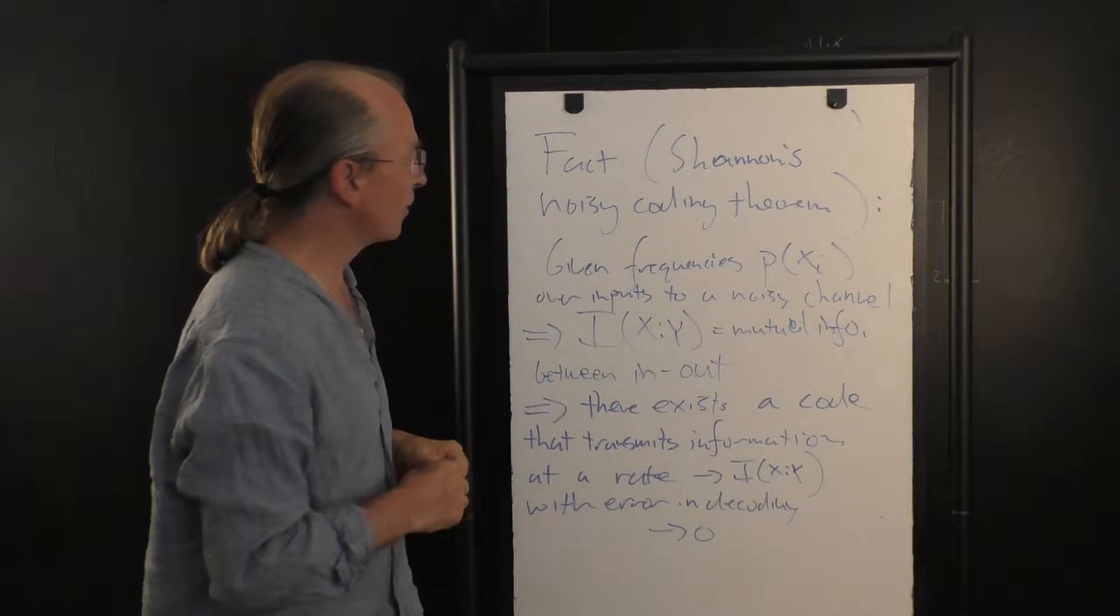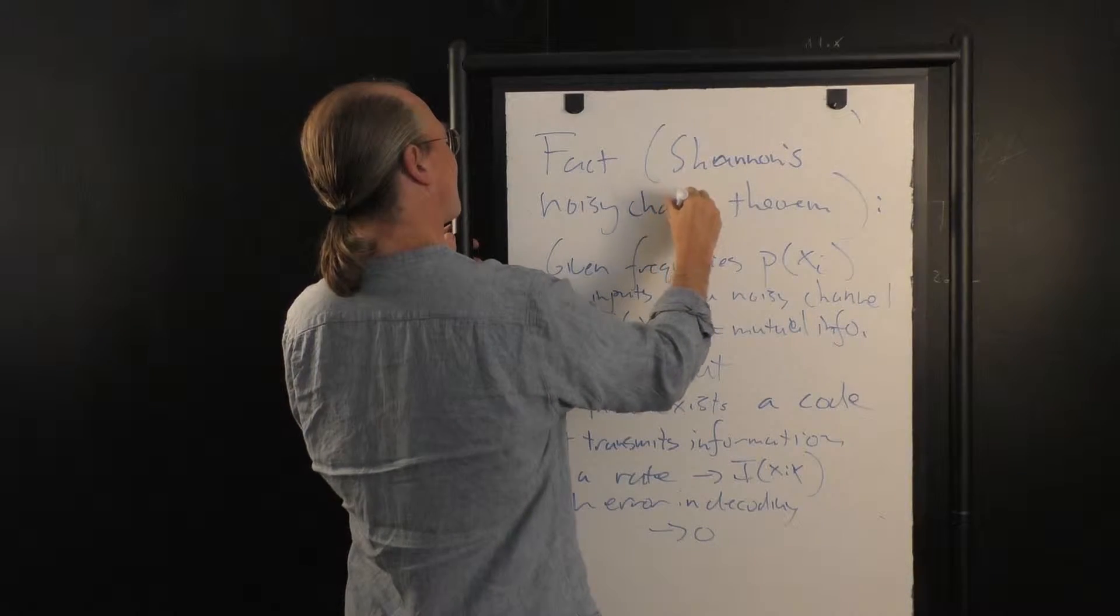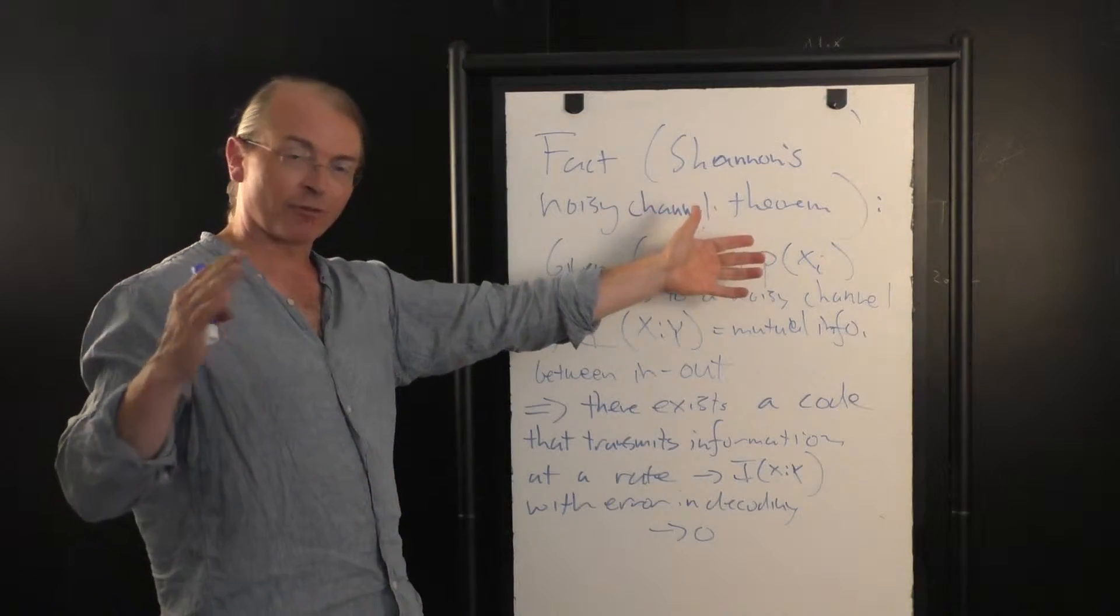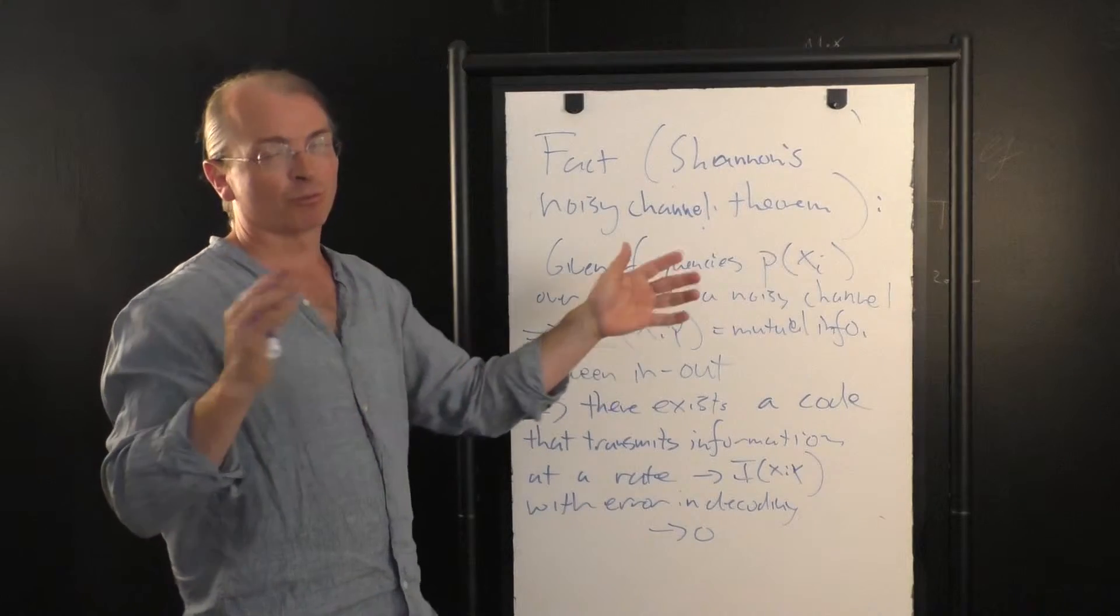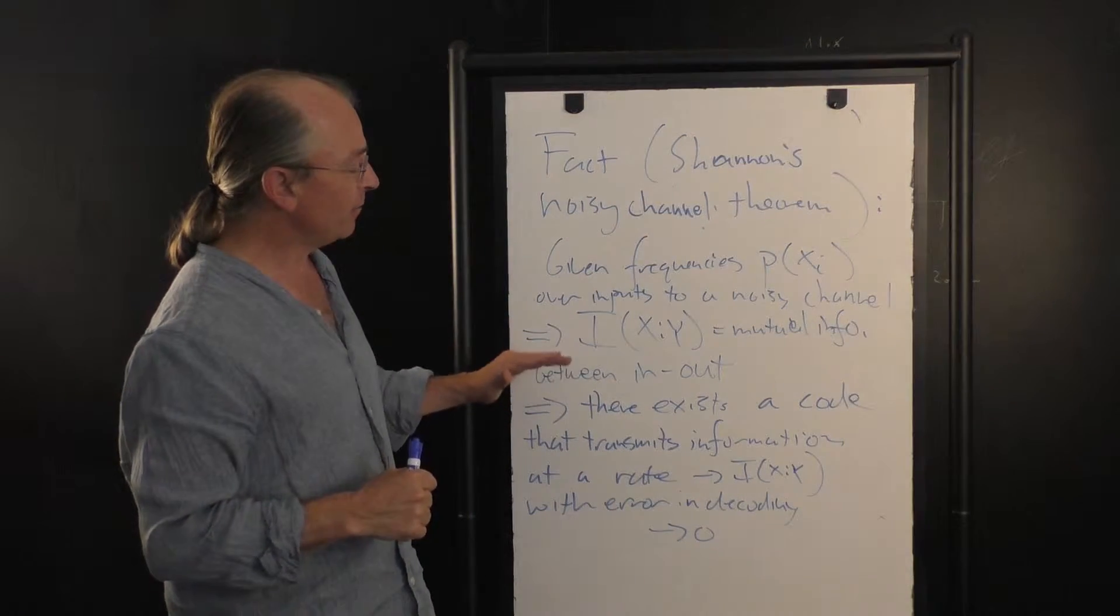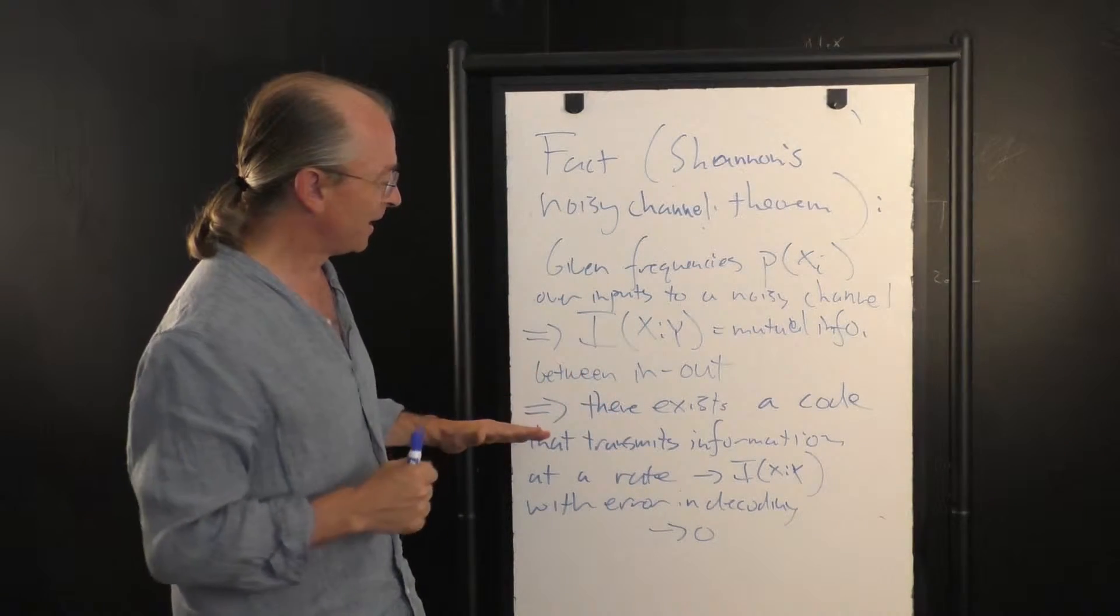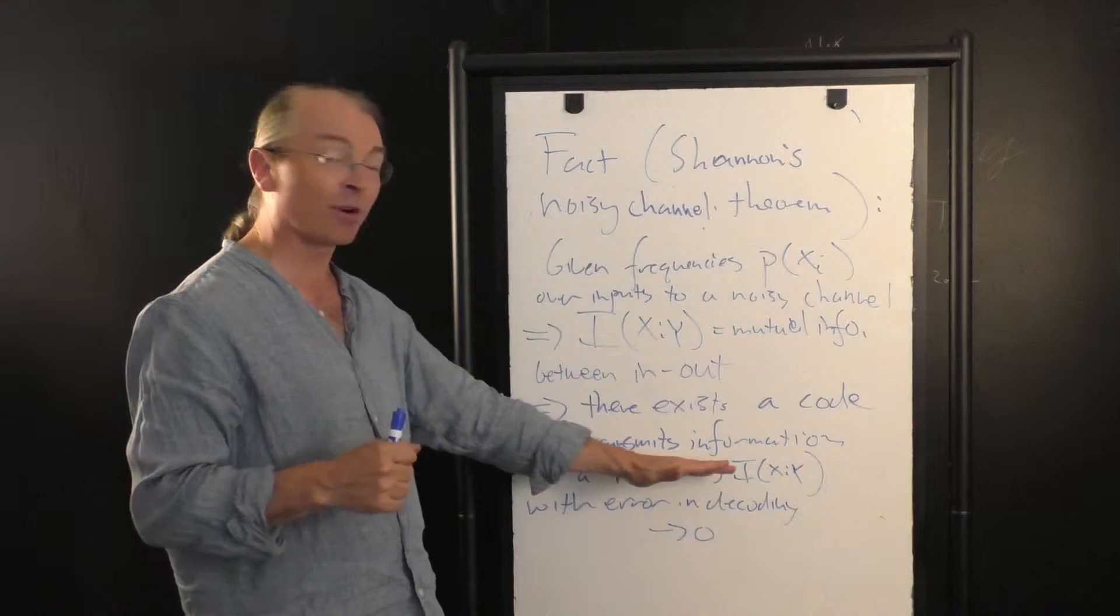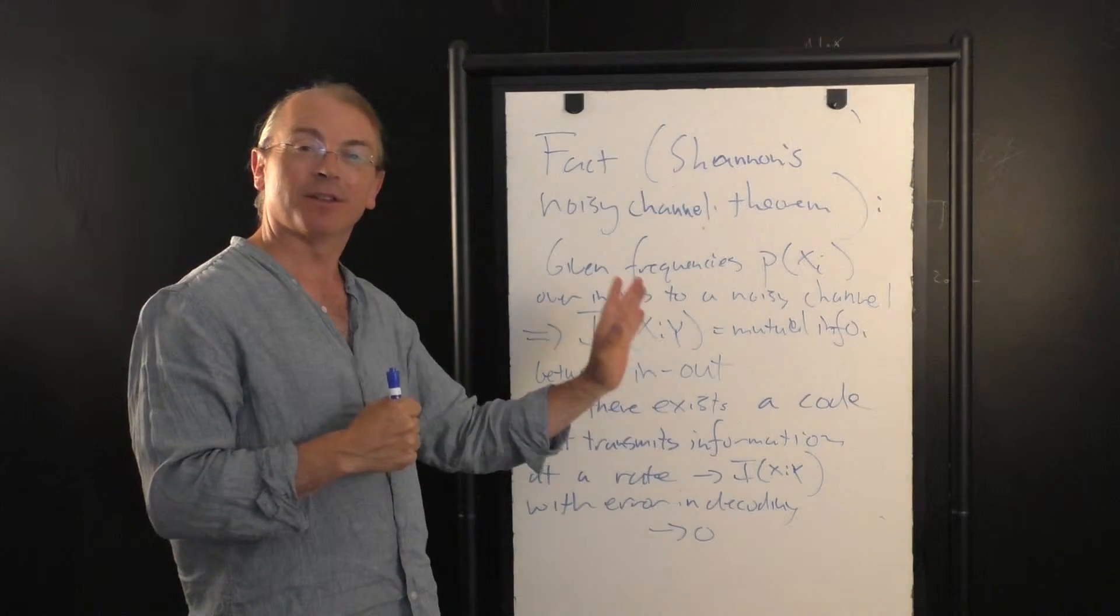So, Shannon's noisy coding theorem says that, or noisy, I should really call it the noisy channel theorem. That's what it's really called. Of course, it is also a noisy coding theorem. It says, if I have a noisy channel, and I have a particular choice of frequencies for inputs, which implies a particular mutual information between input and output, which we argued before is in some sense the amount of information that's going down the channel, then Shannon proved that there actually exists a code, in fact many codes, that will send information down the channel at a rate given by the mutual information, or asymptotically approaching the mutual information as the length of the code words gets large, with an error rate in decoding on Bob's side that goes to zero.